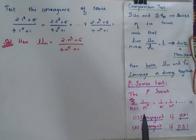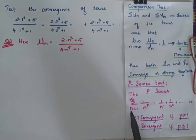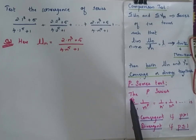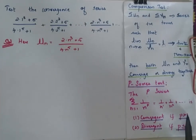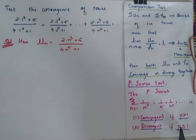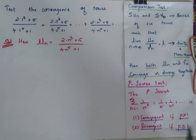In the p-series test, we find the summation from n = 1 to infinity of 1 by n power p. When you check for p: if p is greater than 1, then the series is convergent. If p is less than or equal to 1, then it is divergent.